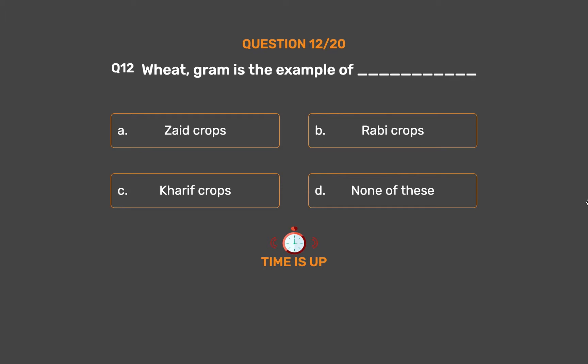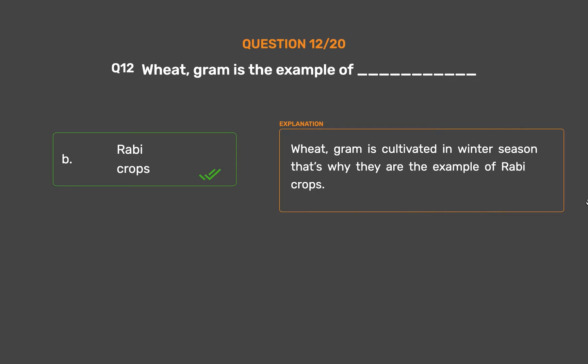The correct answer is Option B: Rabi crops. Wheat and gram are cultivated in the winter season, that's why they are examples of Rabi crops.